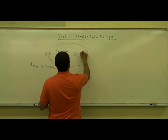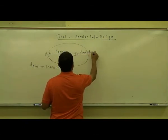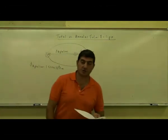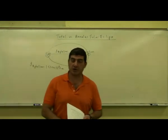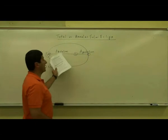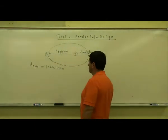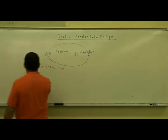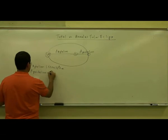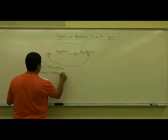The perihelion distance is when the Earth is closest to the Sun, and interestingly, that occurs on or about January 3rd or 4th — the Earth is closest to the Sun — and July 3rd or 4th, the Earth is farthest from the Sun. So the perihelion distance is 1.470 × 10⁸ kilometers.